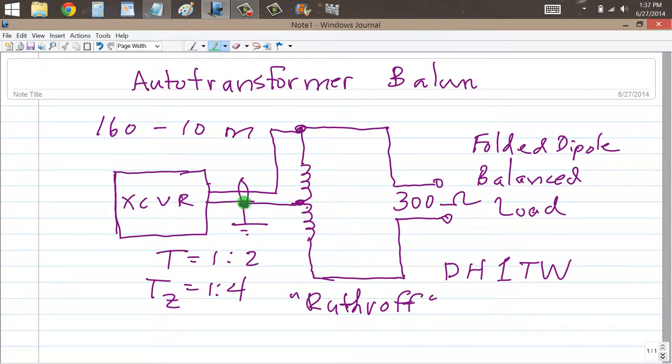Assuming that there is no reactance. This type of transformer, if you wind the number of turns correctly on the right kind of a form, will work on all amateur bands from 160 through 10 meters. And I will provide a link to the web page that shows you actually how you can build one of these things for yourself.